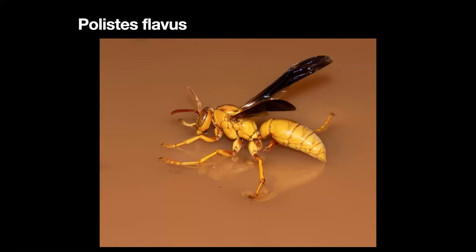Here you see Polistes flavus. When you see a wasp gliding or resting on water — and I'm sure all of us have seen this since we're interested in nature — what they're usually doing is bringing water into their crop, which they'll use together with collected fibers to build their nest.